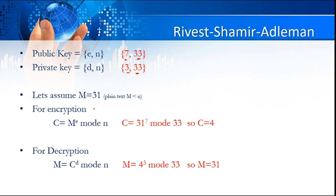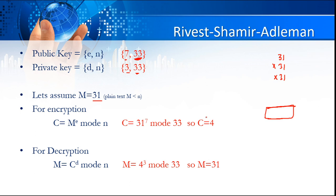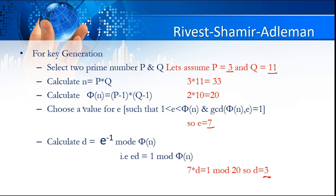I am assuming my plain text M = 31. There is a condition that the plain text must always be less than N, and our N is 33, so 31 works. Let's calculate the cipher text. The encryption formula is C = M^E mod N = 31^7 mod 33. That means 31 multiplied by itself 7 times — you can use a calculator — and then divide by 33. The remainder is 4. So the cipher text C = 4 for plain text M = 31.